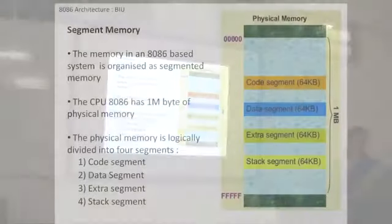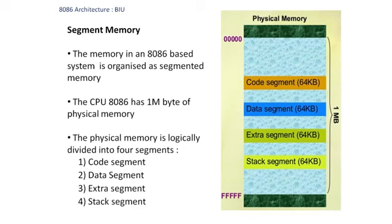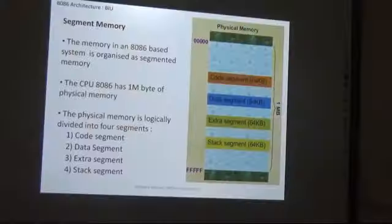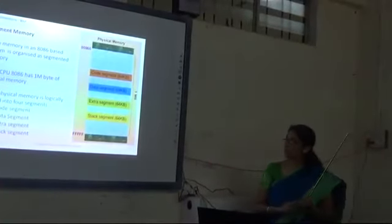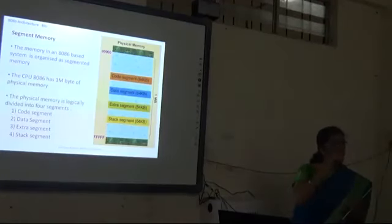There are four segment registers. The general memory of the 8086 is shown here. The address bus width is 20 bits, so the memory that can be accessed is 1 MB. This 1 MB memory is physically available and is logically divided into four segments: the code segment, data segment, extra segment, and stack segment. This division is done for simplicity of execution; it reduces complexity because each segment has a particular application.